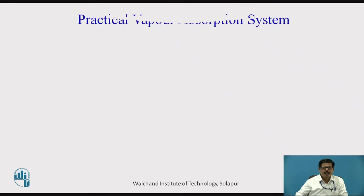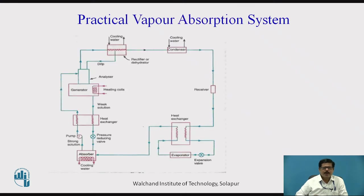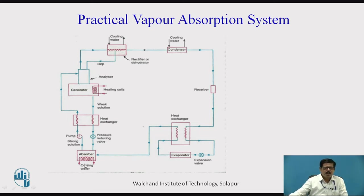In practical vapor absorption system, that is aqua ammonia vapor absorption system, some changes are made so that we will get higher COP compared to the simple vapor absorption system. Now let us see the working of practical vapor absorption system and what are the changes made as compared to the simple vapor absorption system. You can see this particular line diagram.